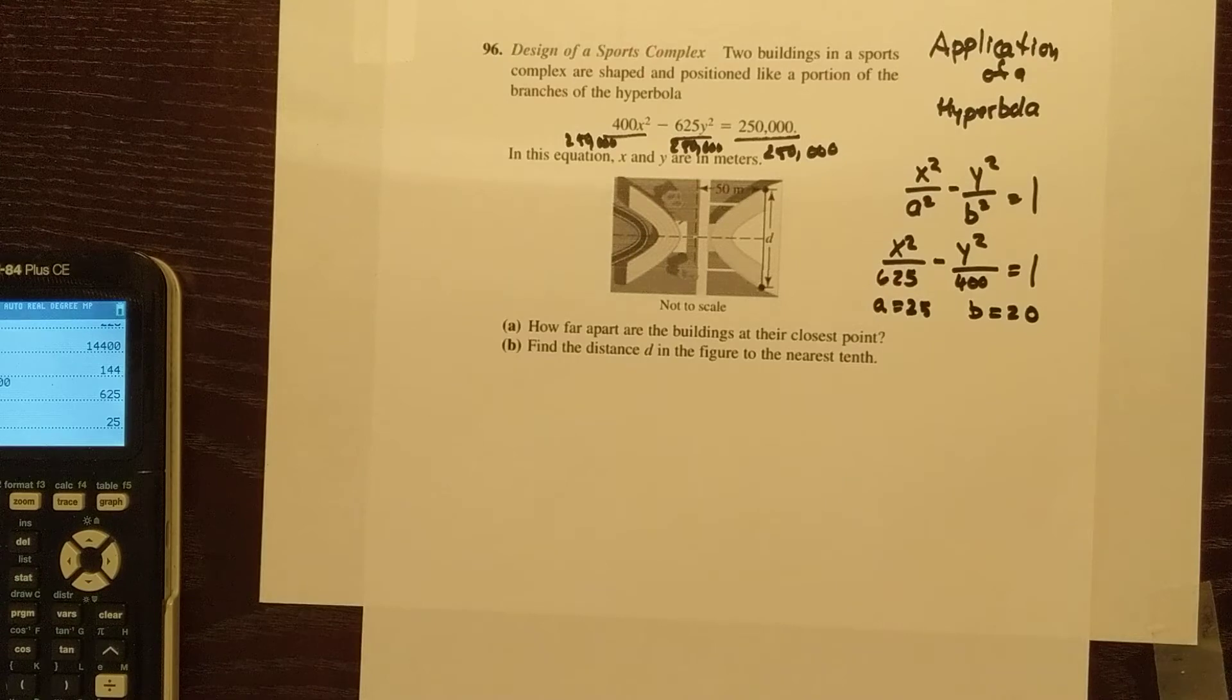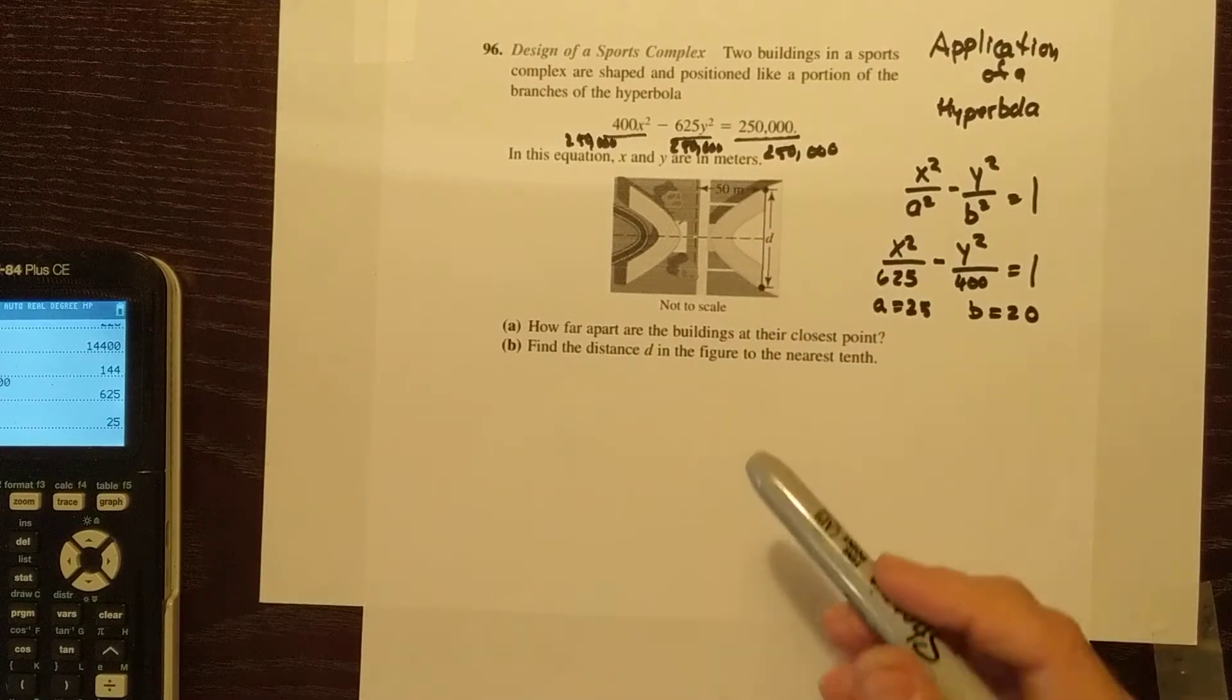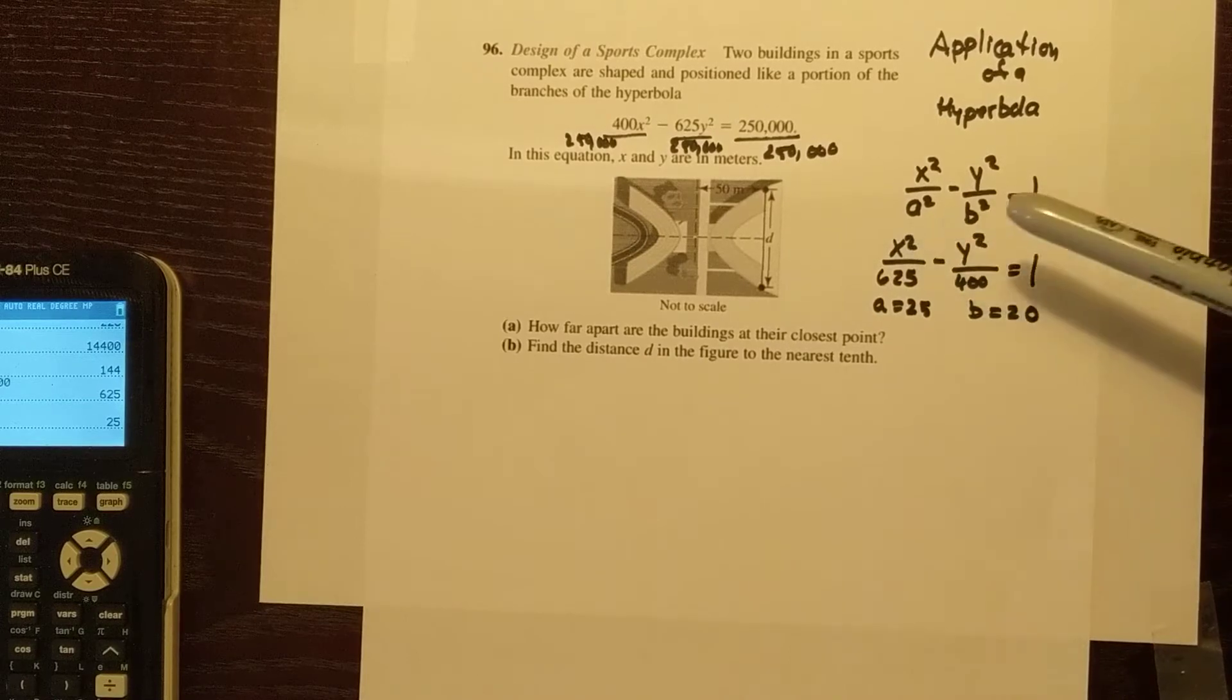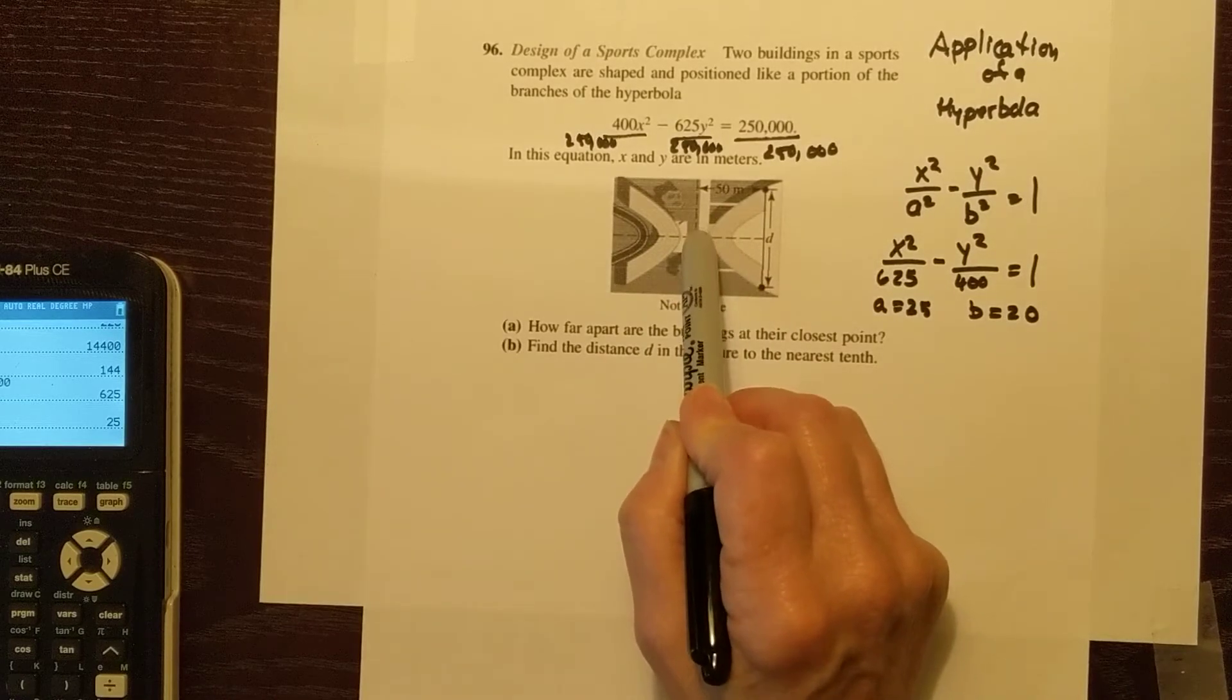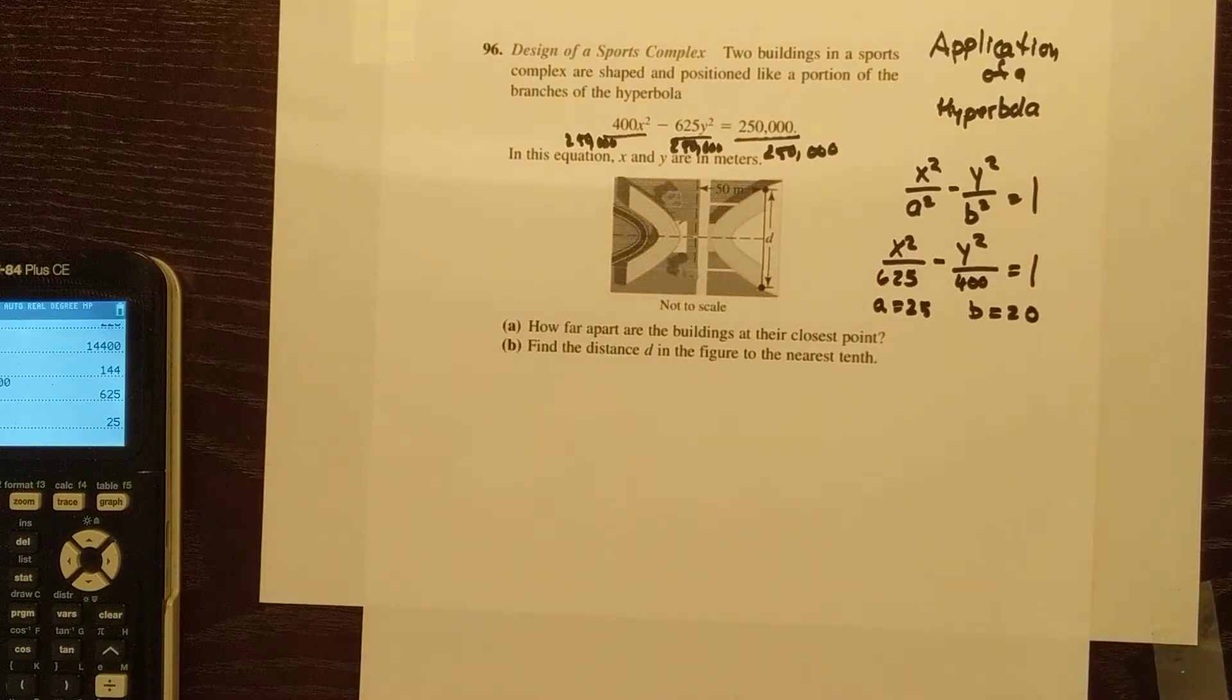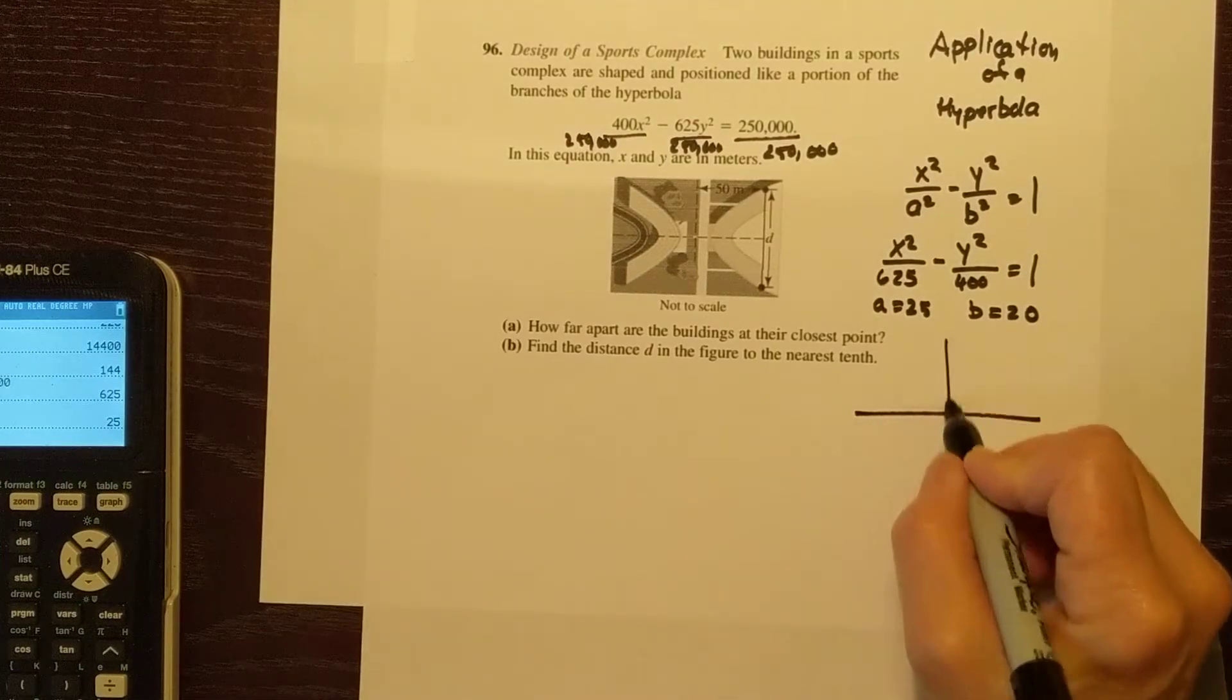They gave us this nice picture here, so we know our parabola is oriented and symmetric about a horizontal axis. That's because X is leading. So if this is our center and this is our hyperbola, from the center to the vertices is a. I'm going to do a quick sketch of this. It's centered at the origin.